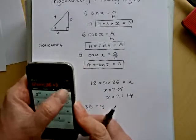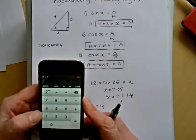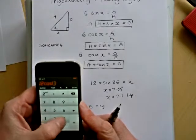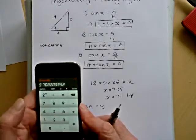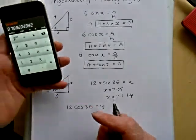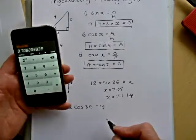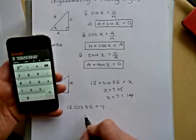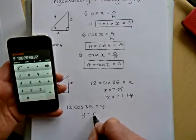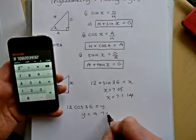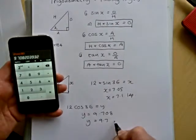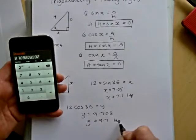So again, we need our calculator to do that. So 12 cos 36 equals, and we've got 9.7 there. So 12 cos 36 equals 9.708, so y equals 9.7 to 1 decimal place.